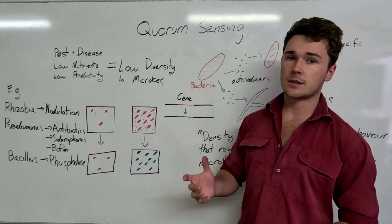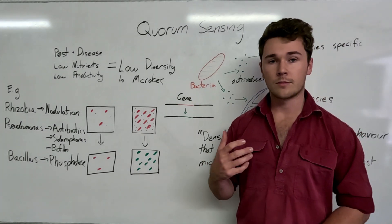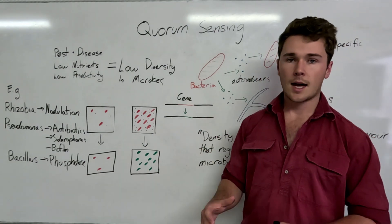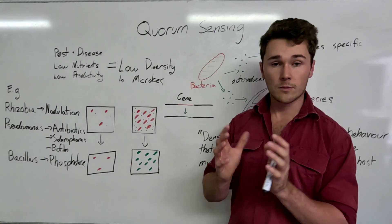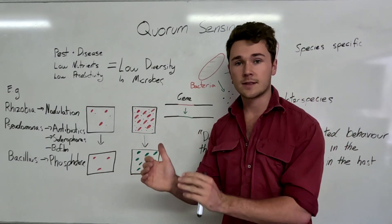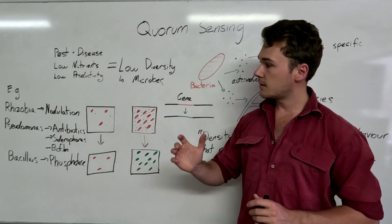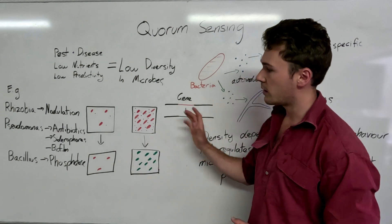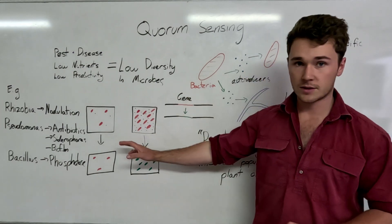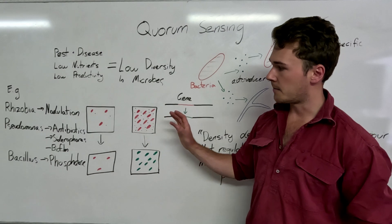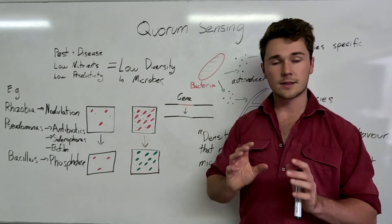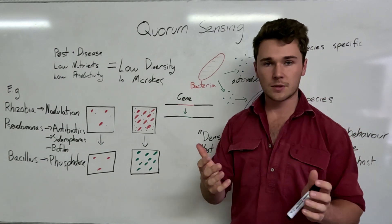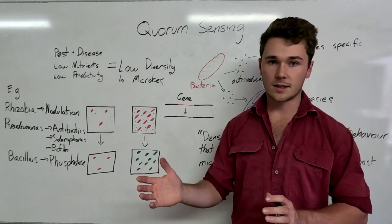Now on the other side of this is what's called quorum quenching, which is where say you do have a pathogen in the soil and that pathogen is quorum sensing. There can be a disruption in that communication when you have high amounts of biodiversity. So if everyone's releasing all these auto-inducers, then sometimes the signal between the pathogens can get disrupted and so we're going to reduce disease.